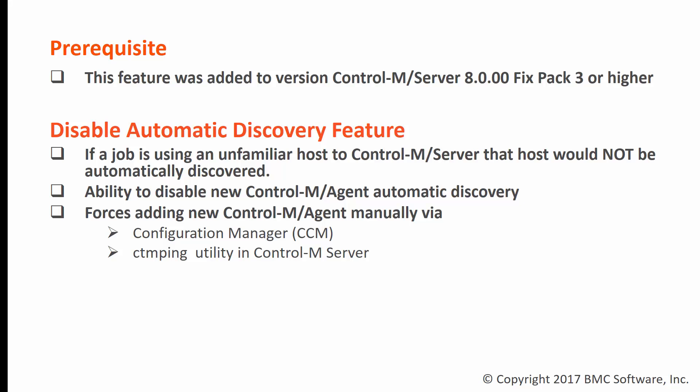The Control-M agent automatic discovery feature is designed to minimize the need for the Control-M administrator to add a new agent in advance before the scheduler defines a job with the new agent's name. Once a job with the new agent's name runs, the Control-M server will try to communicate with the new agent to submit the job.